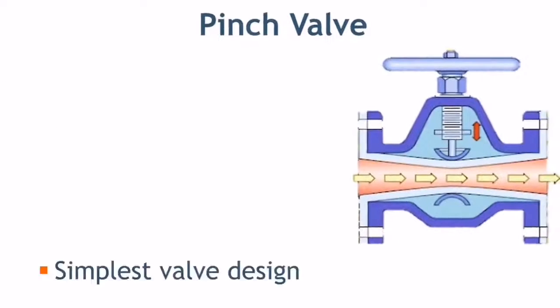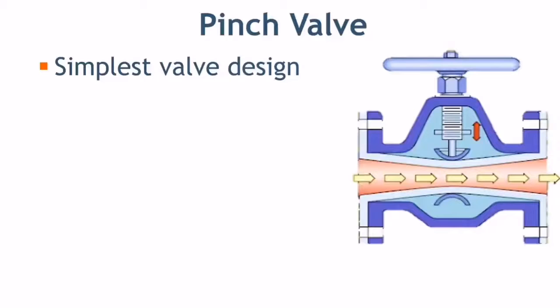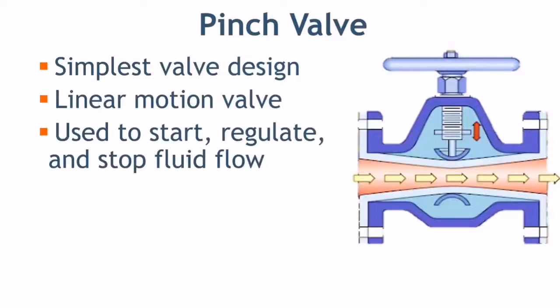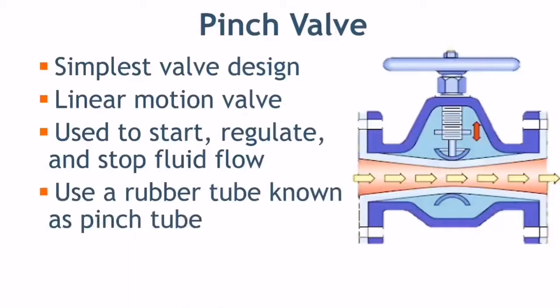The pinch valve, also known as a clamp valve, is a linear motion valve used to start, regulate, and stop fluid flow. It uses a rubber tube, also known as a pinch tube, and a pinch mechanism to control the fluid. Pinch valve is ideally suited for the handling of slurries, liquids with a large amount of suspended solids, and systems that convey solid material pneumatically.